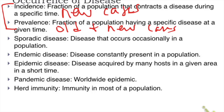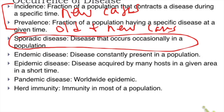Sporadic means a disease that occurs occasionally in a population. For example, if in a population of about one million people in Dasmariñas there are only three cases of meningococcemia, we do not consider that an epidemic — that's just sporadic.